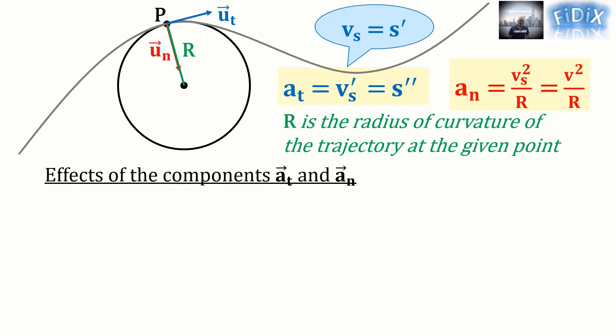What about the effects of the components a_t and a_n? To have an idea about the effect of any one of these two vectors, we will suppose it doesn't exist and see the result.